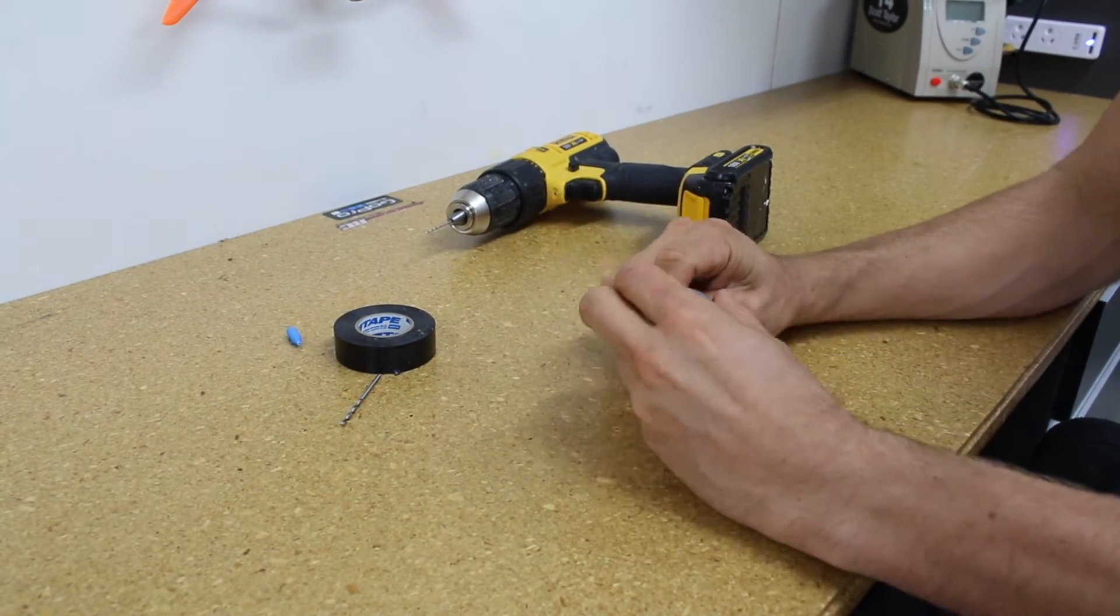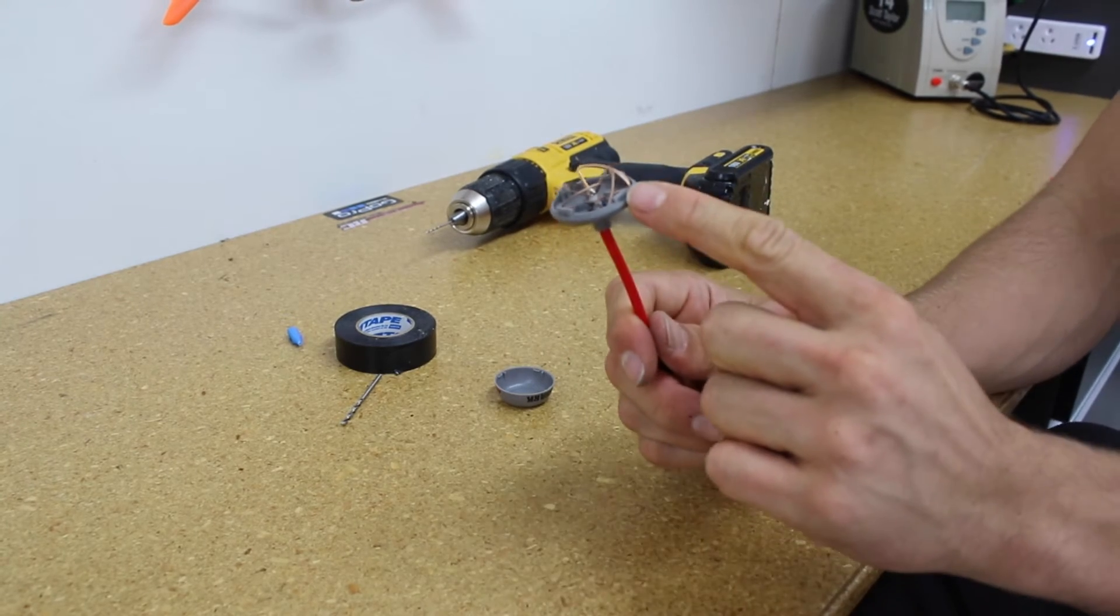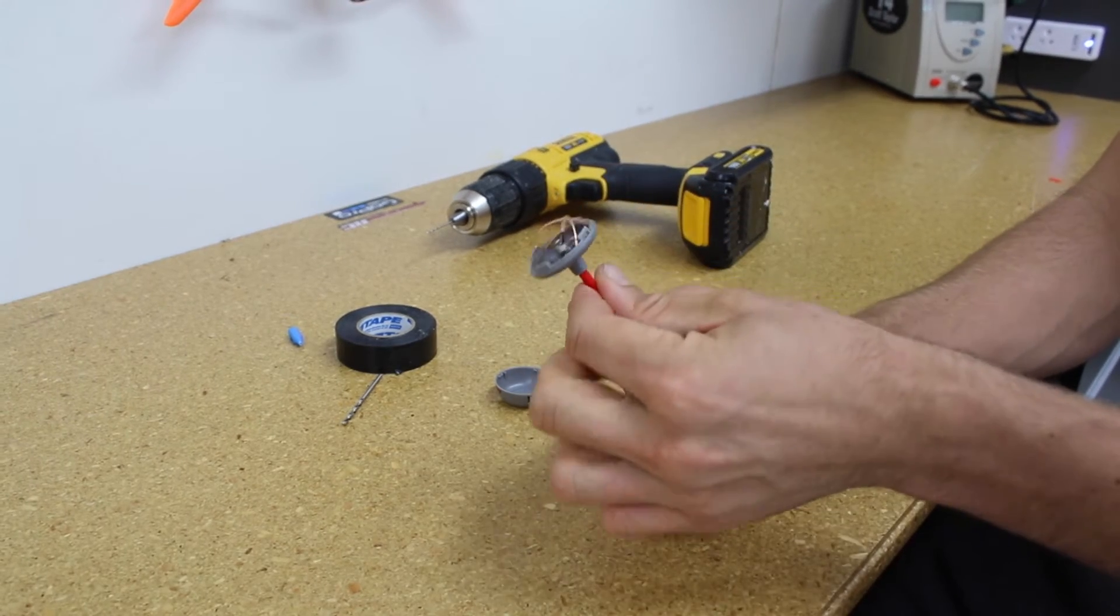So the first thing we're going to have to do, these little leaves in here you don't want to be touching these, you don't want to be bending them.